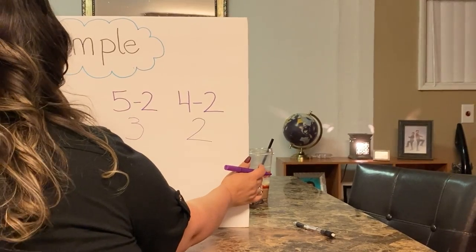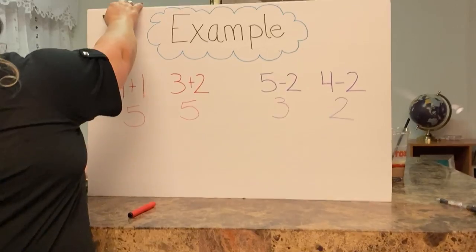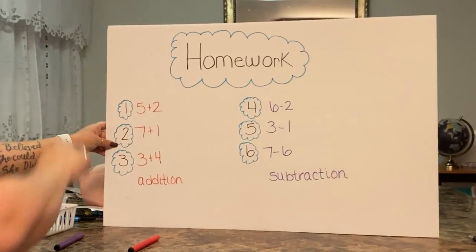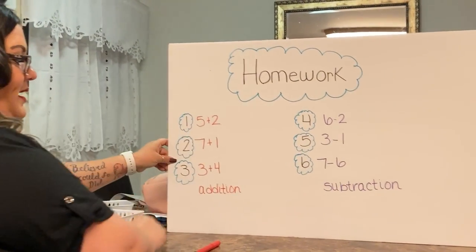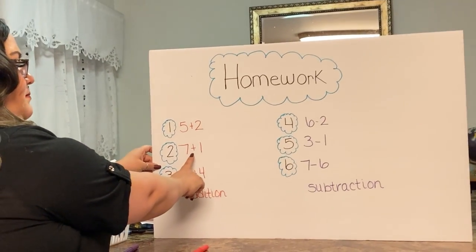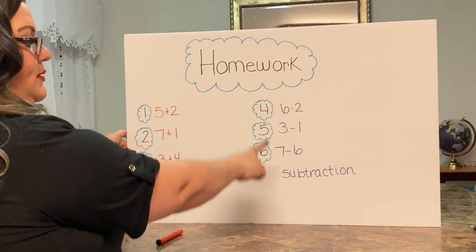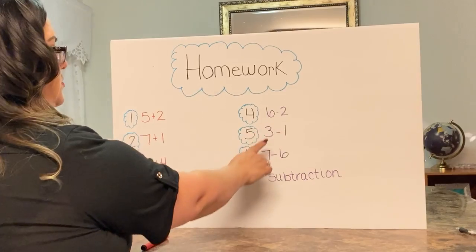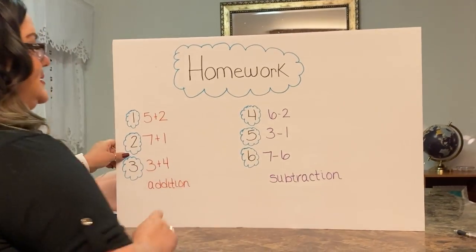Now it's your turn to try some at home. Here we have one, two, three, four, five, and six. On this side you have your addition. Five plus two. Seven plus one. Three plus four. And on this side you have your subtraction. Six minus two. Three minus one. Seven minus six.